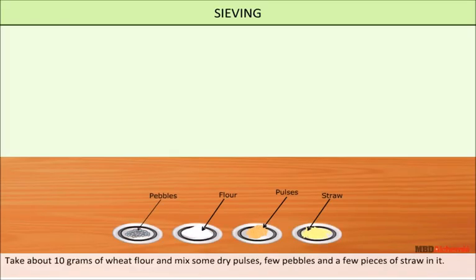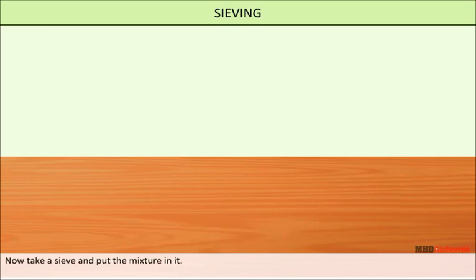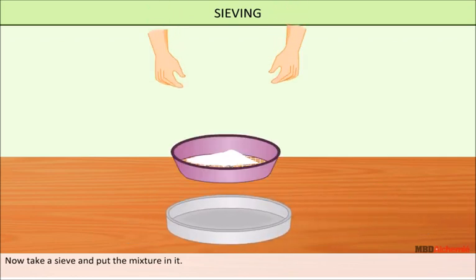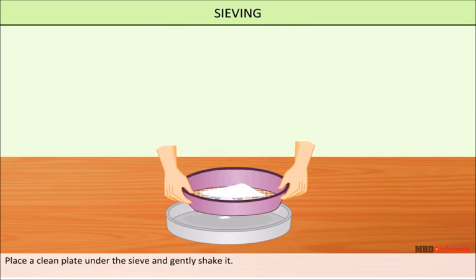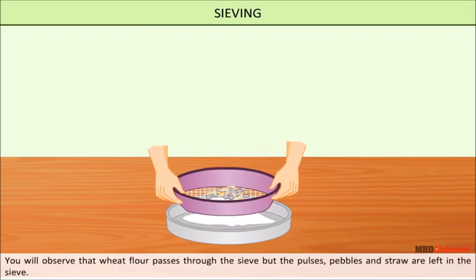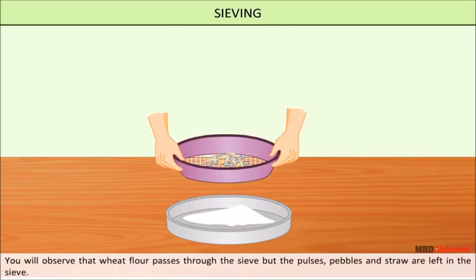Take about 10 grams of wheat flour and mix some dry pulses, a few pebbles, and a few pieces of straw in it. Take a sieve, put the mixture in it, place a clean plate under the sieve, and gently shake it. You will observe that wheat flour passes through the sieve, but the pulses, pebbles, and straw are left in the sieve.